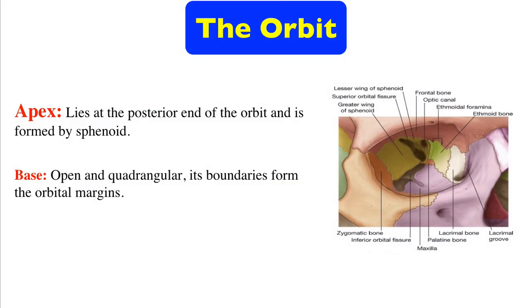The apex of the orbit lies at the posterior end of the orbit and is formed by the sphenoid bone. The base of the orbit is open and quadrangular, and its boundaries form the orbital margins.